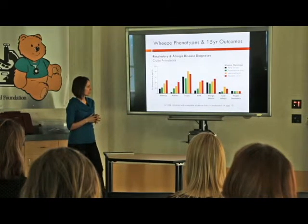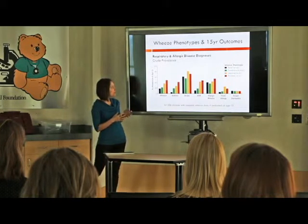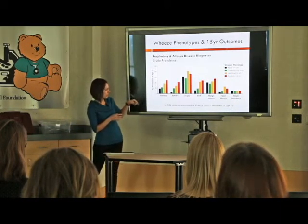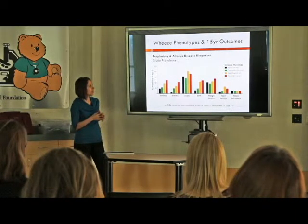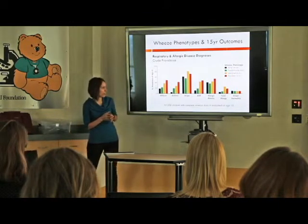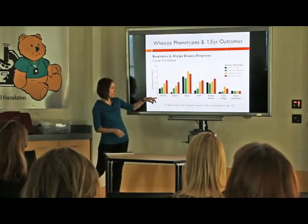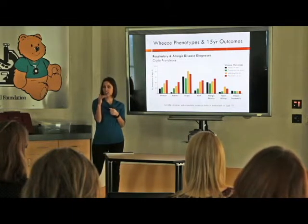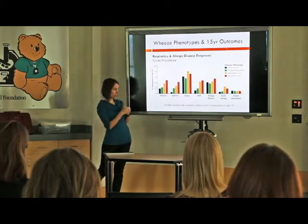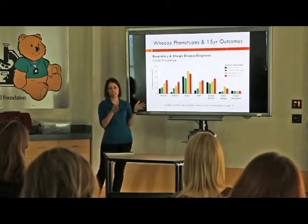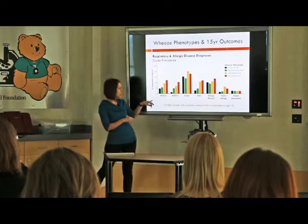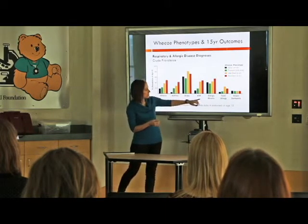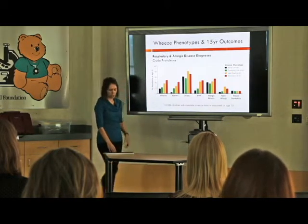Moving to outcomes — showing current prevalence at 15 years of age by wheeze phenotype. In black are the never-wheezers who have the lowest rates of allergic and respiratory disease in almost every case. In green are transient early, orange is late onset, and red is persistent. Particularly for the respiratory outcomes — wheezing and asthma — there is a really obvious gradient: never wheezers have the lowest rates, then an increase with transient early wheezing, a further increase with late onset, and the highest rates in children with persistent wheezing. However, there is no clear pattern for allergic outcomes such as atopy, allergic rhinitis, food allergy, or atopic dermatitis.